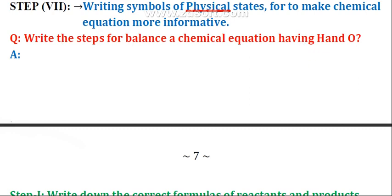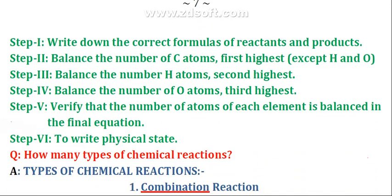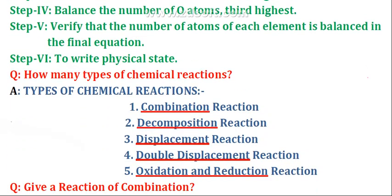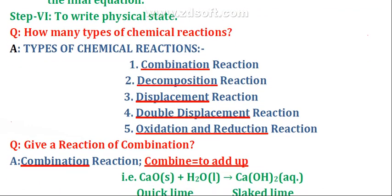The last step is to check the correctness of the balanced equation — we should be sure that on both sides the number of each element is equal. Then the last step is to make the chemical equation more informative by writing the physical state. For balancing a chemical equation having H and O: step one — write down the correct formulas of reactants and products; step two — excluding hydrogen and oxygen, balance the remaining atoms; step three — balance hydrogen atoms; step four — balance oxygen atoms; step five — verify; step six — write physical state.